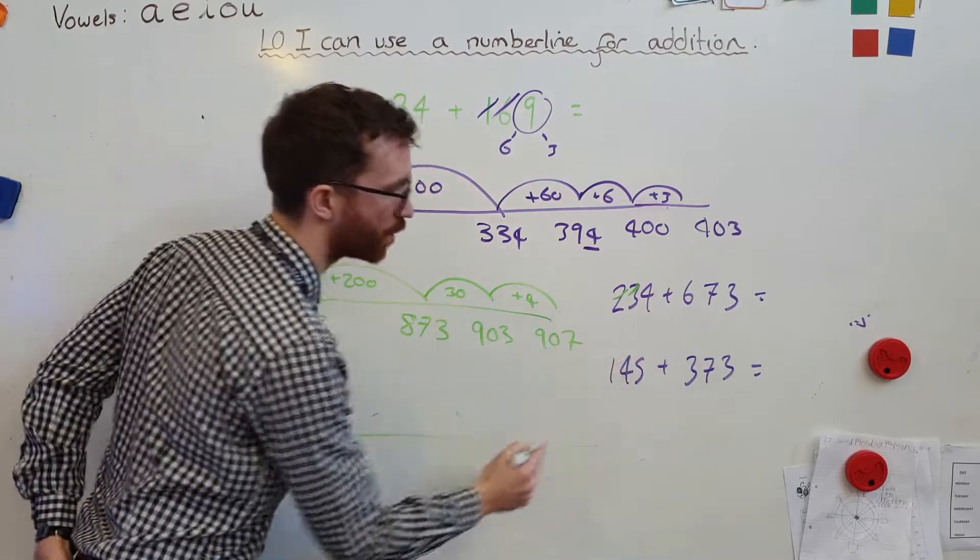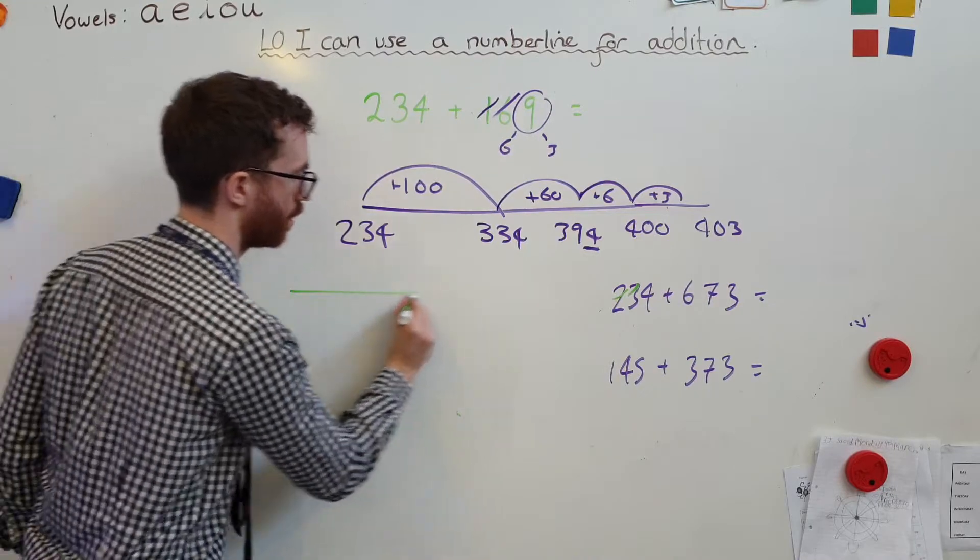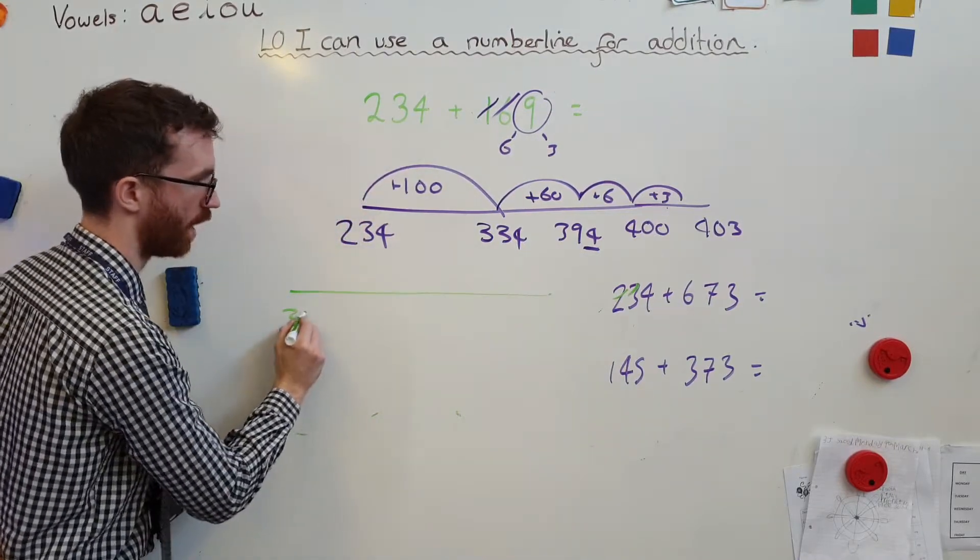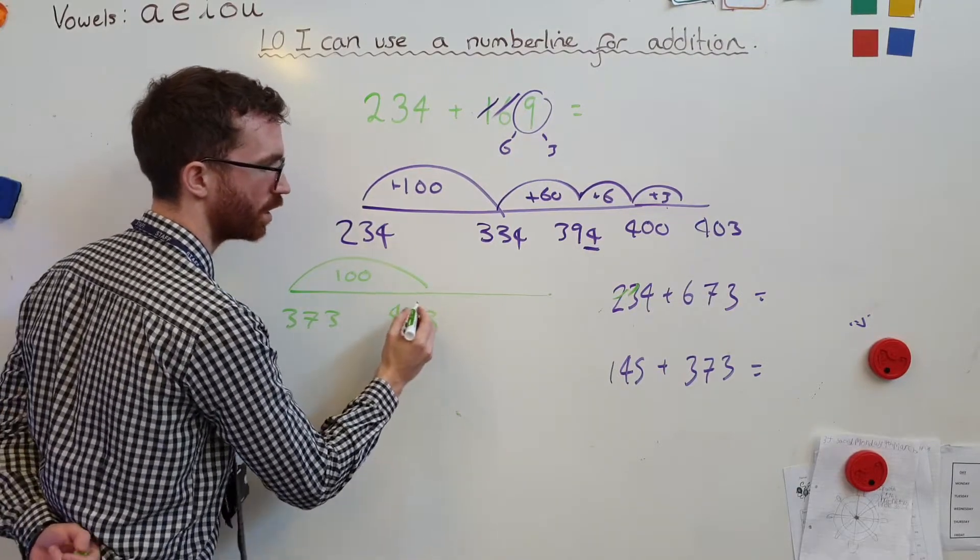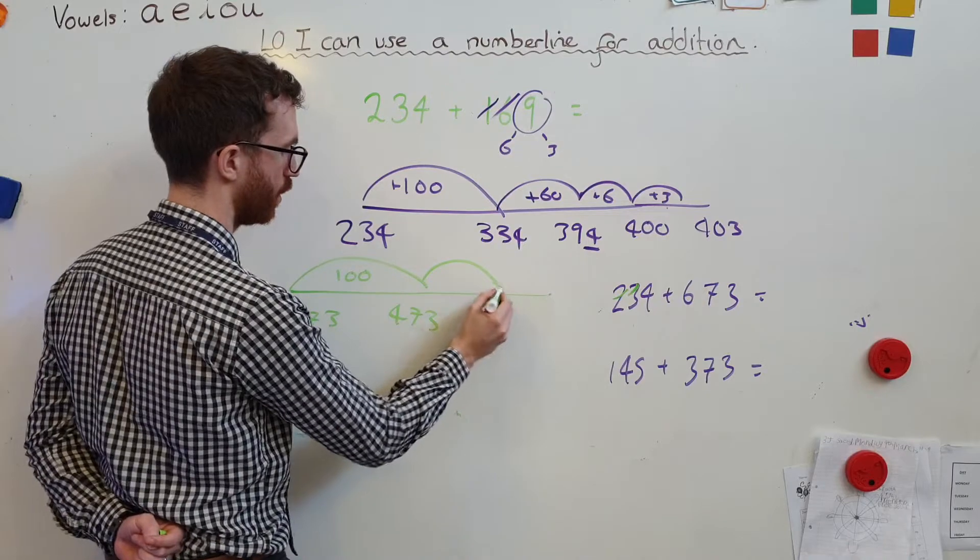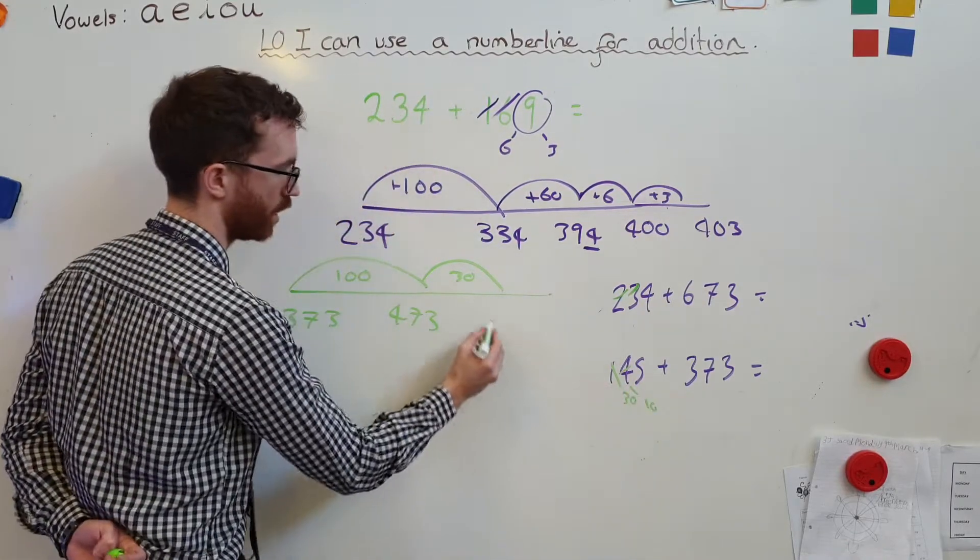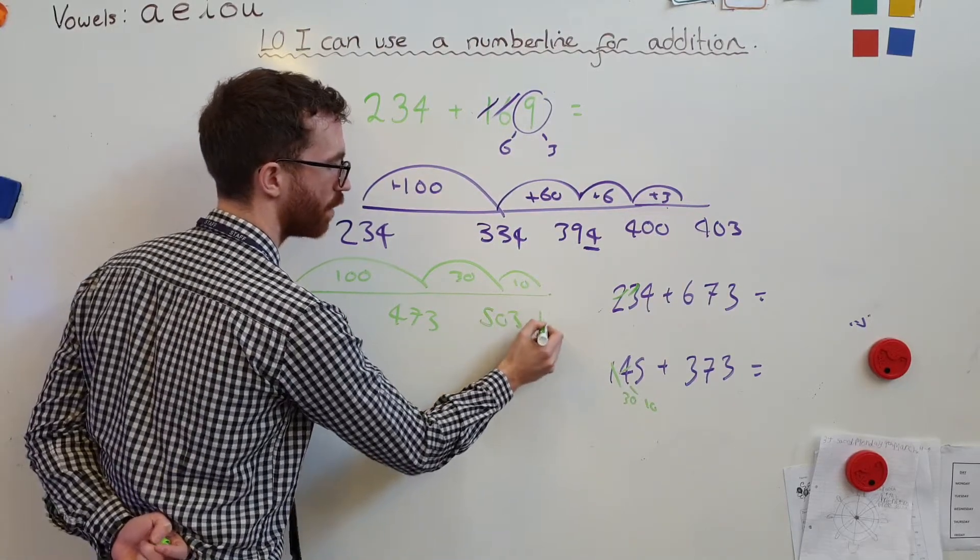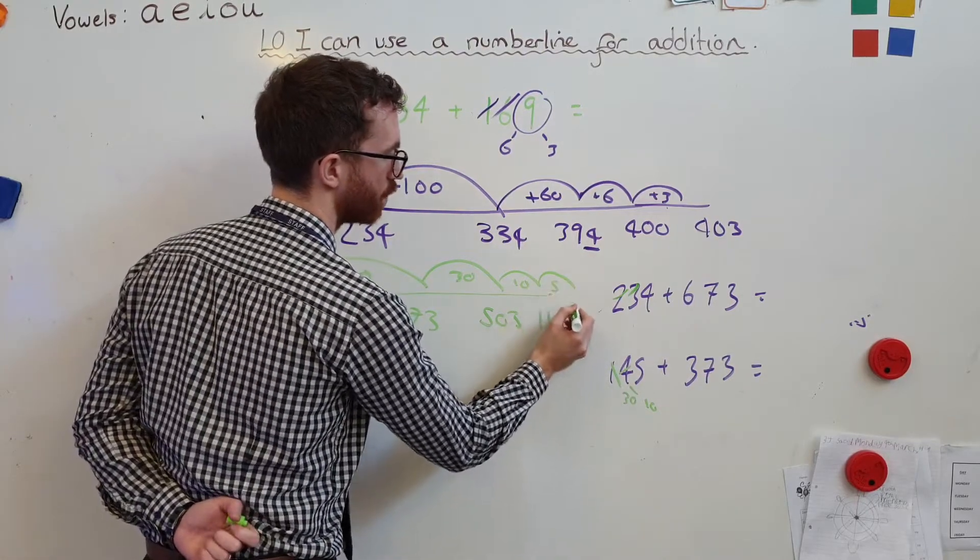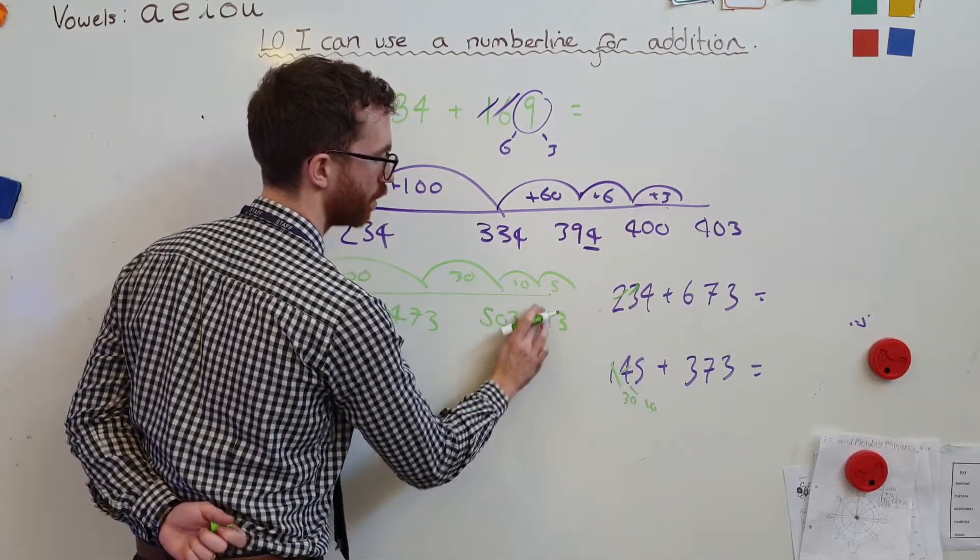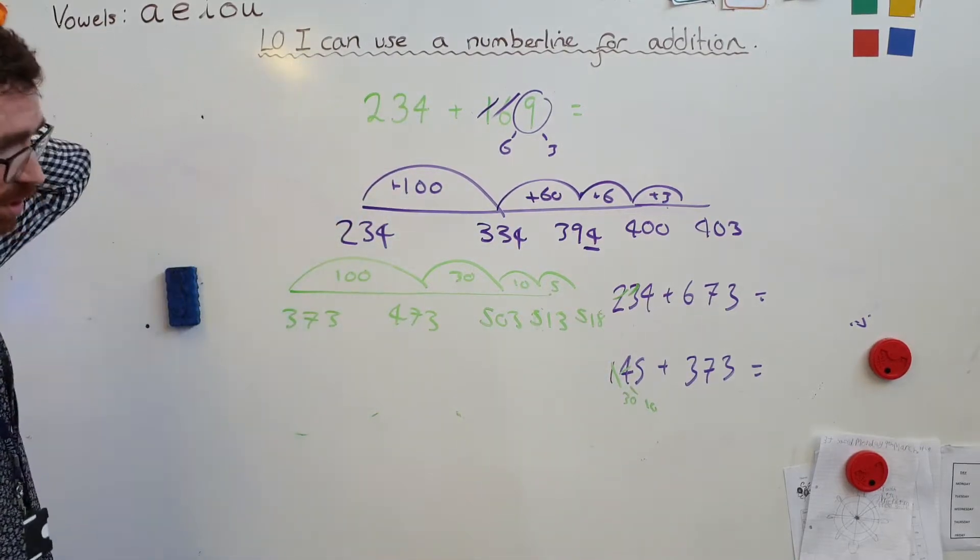Last one. 145 add 337. I'll tell you what, let's do it up here. I'm not sure where the camera goes to. So, 373. I'm going to add 100. It gets me to 473. I'm going to add 30, because I'm going to do my number bond, so that's 30 and 10, which is going to get me to 503. 10 is going to get me to 513. Then we've got 5 to add, which gets me to 518. Okie dokie.